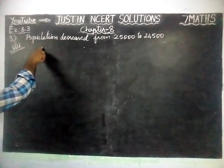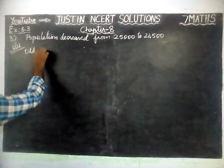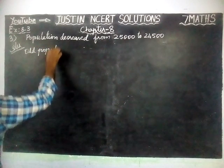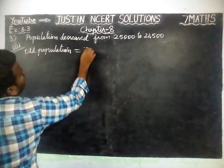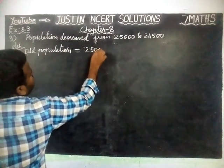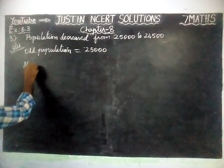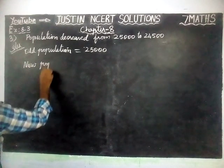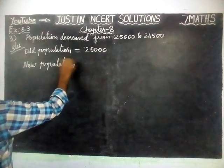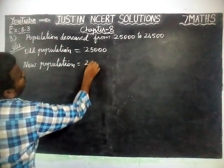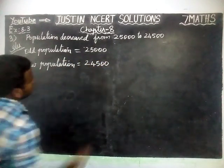First, we will write the given information. Old Population is equal to 25,000. New Population is equal to 24,500.